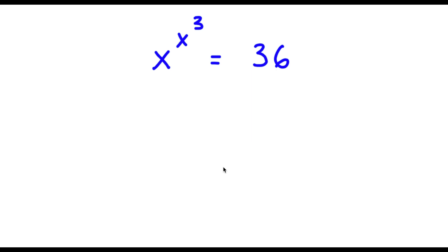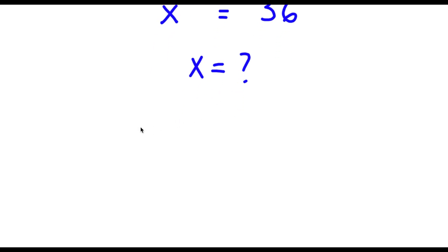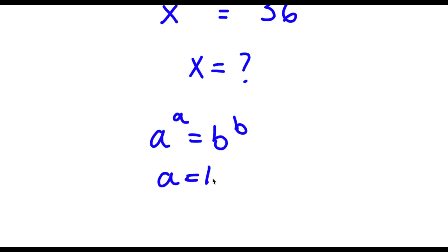Alright, so I have x to the power of x to the power of 3 is equal to 36. Right here, I want to find the value of x. So before solving this problem, I'm going to teach you guys an important property of exponents. If I have something in the form a to the power of a is equal to b to the power of b, then a is equal to b, but this is only if a is greater than or equal to 1.